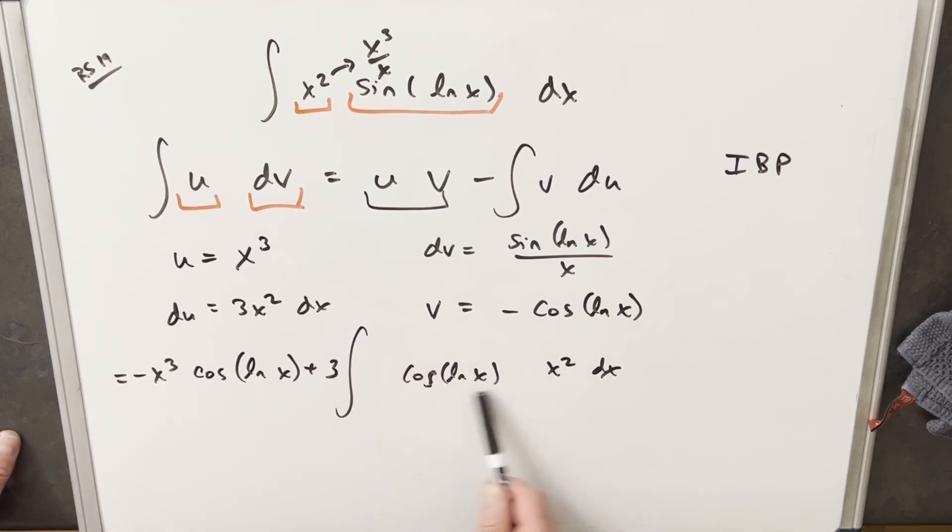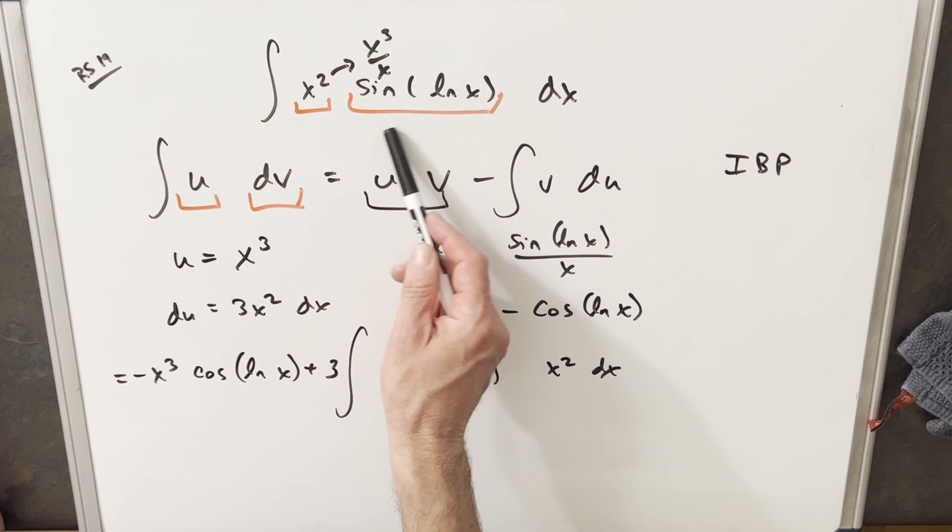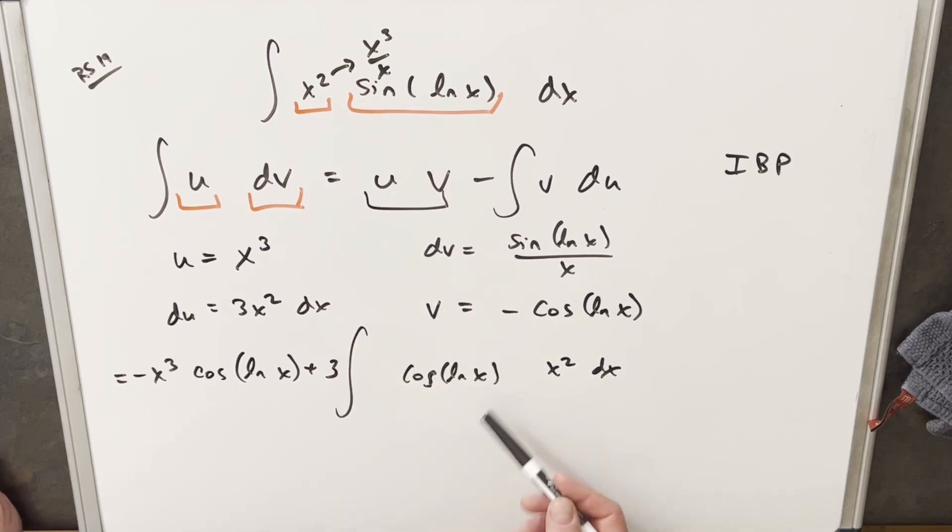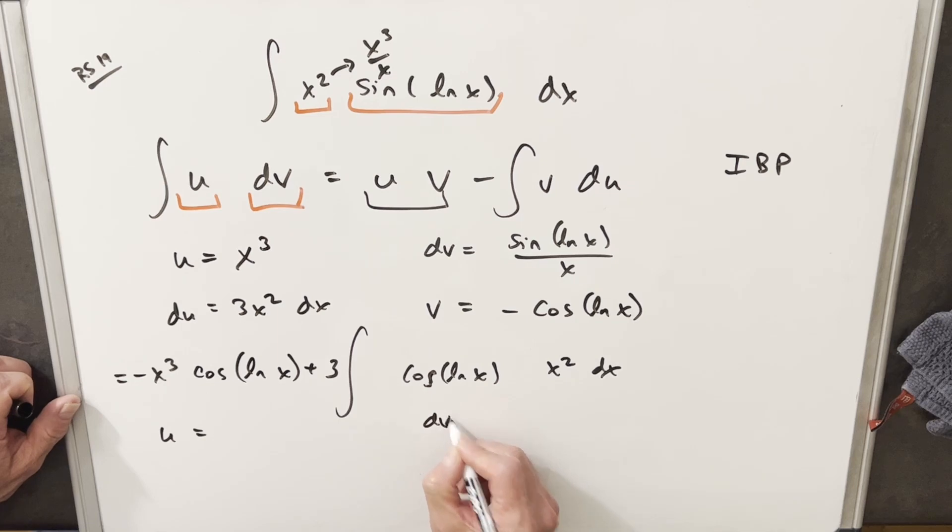From here, what we need to do is we need to integrate cosine ln x times x squared. But notice this integral right here is just so similar to what we started with that we're just going to do a very similar thing. We're going to do integration by parts, and we'll set it up again.